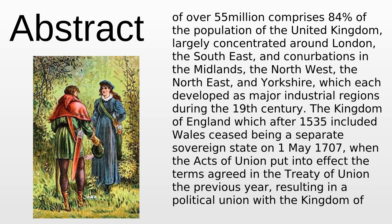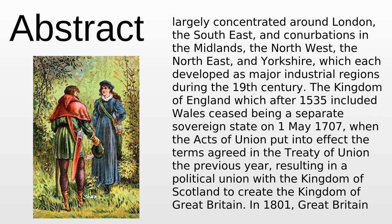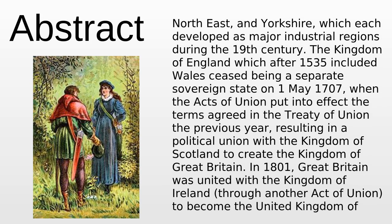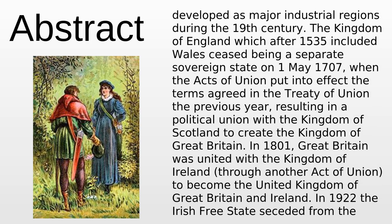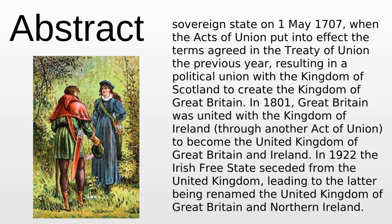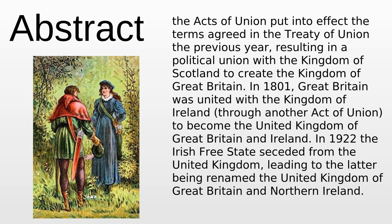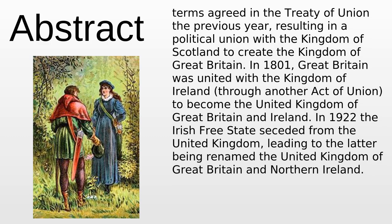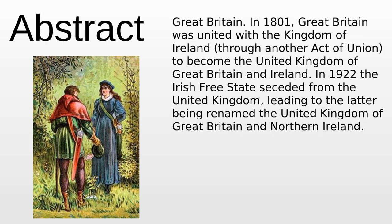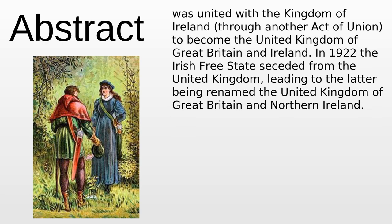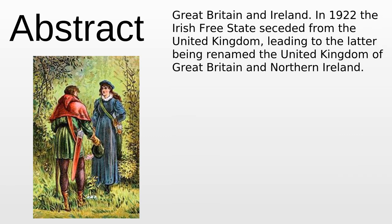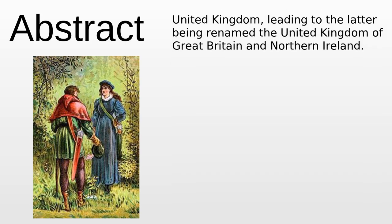England's population is largely concentrated around London, the south-east, and conurbations in the Midlands, the north-west, the north-east, and Yorkshire, which each developed as major industrial regions during the 19th century. The Kingdom of England, which after 1535 included Wales, ceased being a separate sovereign state on 1 May 1707, when the Act of Union resulted in a political union with the Kingdom of Scotland to create the Kingdom of Great Britain. In 1801, Great Britain united with the Kingdom of Ireland. In 1922, the Irish Free State seceded, leading to the renaming as the United Kingdom of Great Britain and Northern Ireland.